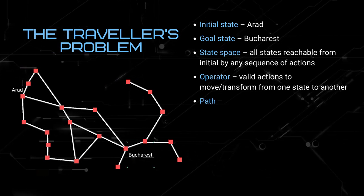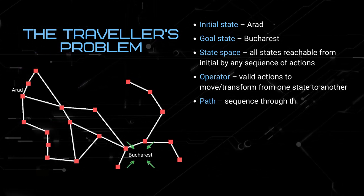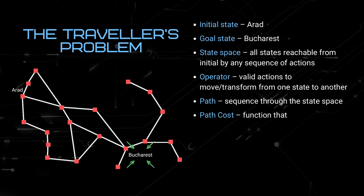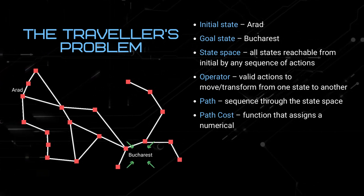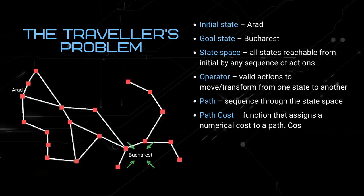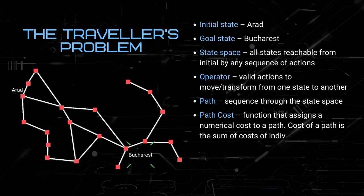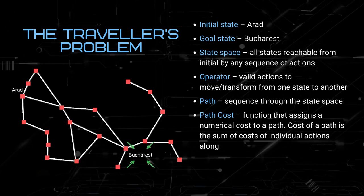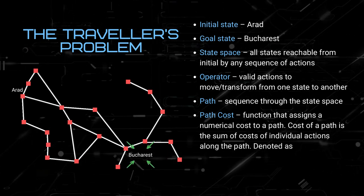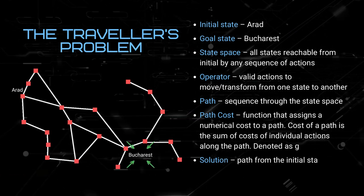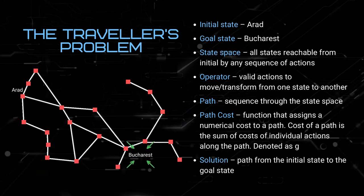Operator is the valid moves, which is to move from one city to another city. The path is the sequence through the state-space, or here, we can say the cities. While the path cost is the total cost of using that path, whereby we always denote it as G. And finally, solution is the path from initial state to goal state.